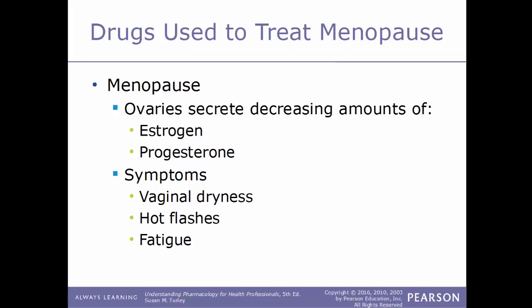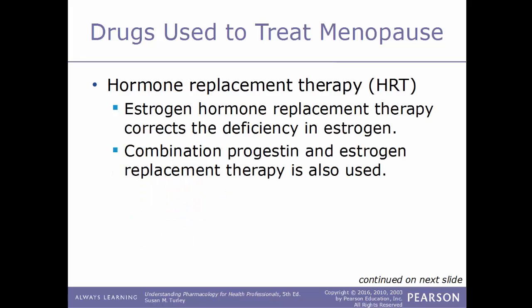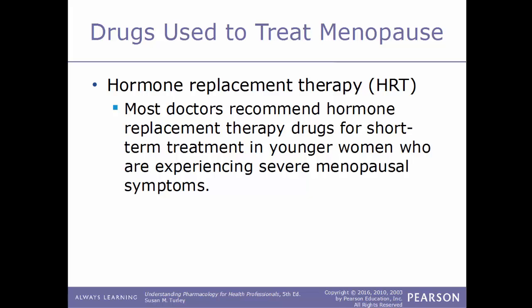Drugs used to treat menopause: with menopause, the ovaries secrete a decreasing amount of estrogen and progesterone. Common symptoms include vaginal dryness, hot flashes, and fatigue. One method of treatment is HRT, hormone replacement therapy. You can have estrogen hormone replacement therapy to correct the estrogen deficiency, or a combination therapy including progestin and estrogen replacements. Most doctors recommend hormone replacement drugs for short-term treatment in younger women experiencing severe menopausal symptoms.